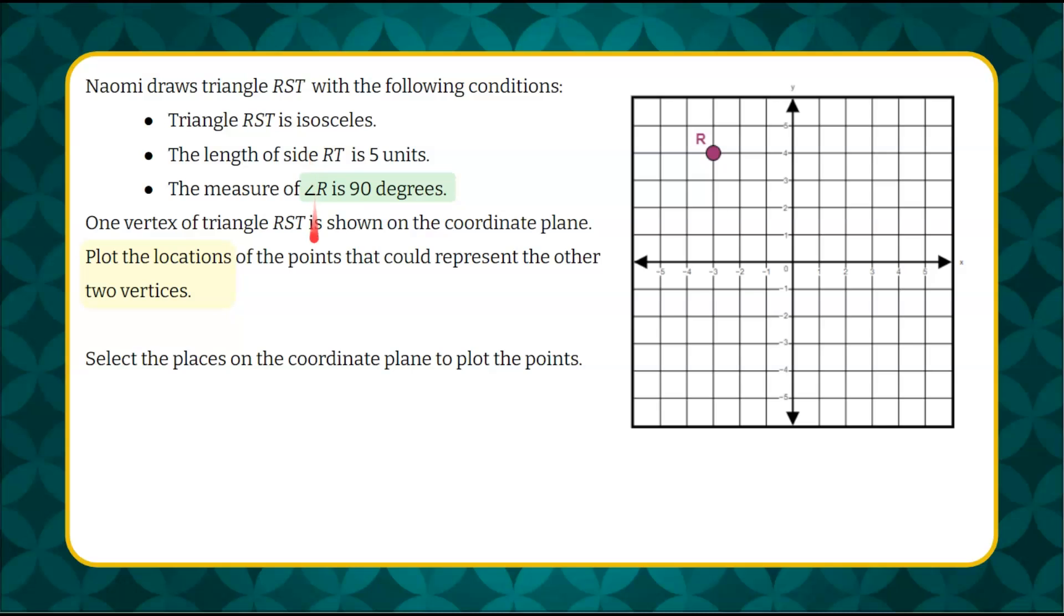We're going to begin by understanding that the measure of angle R is 90 degrees. So there are three facts about the triangle here, but when I evaluate this, I see that I already have R here.